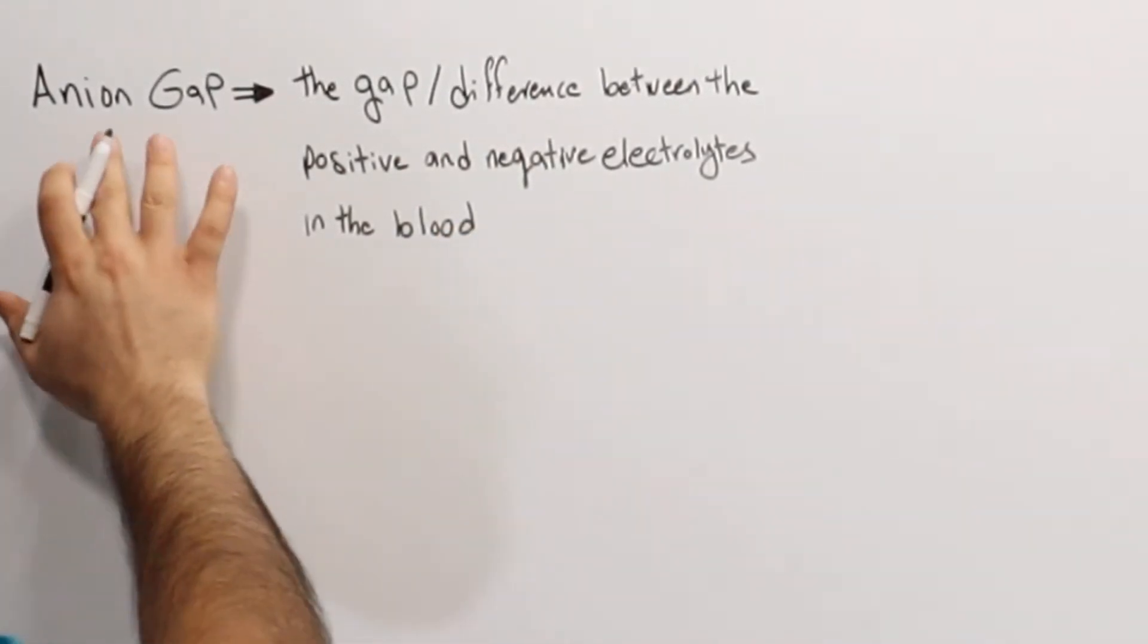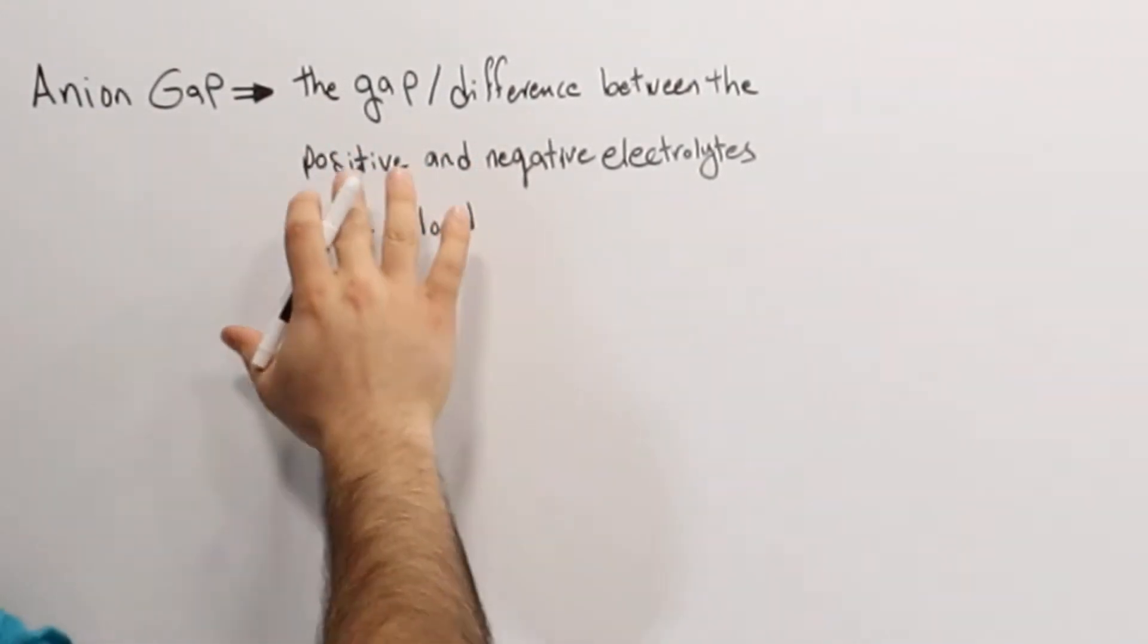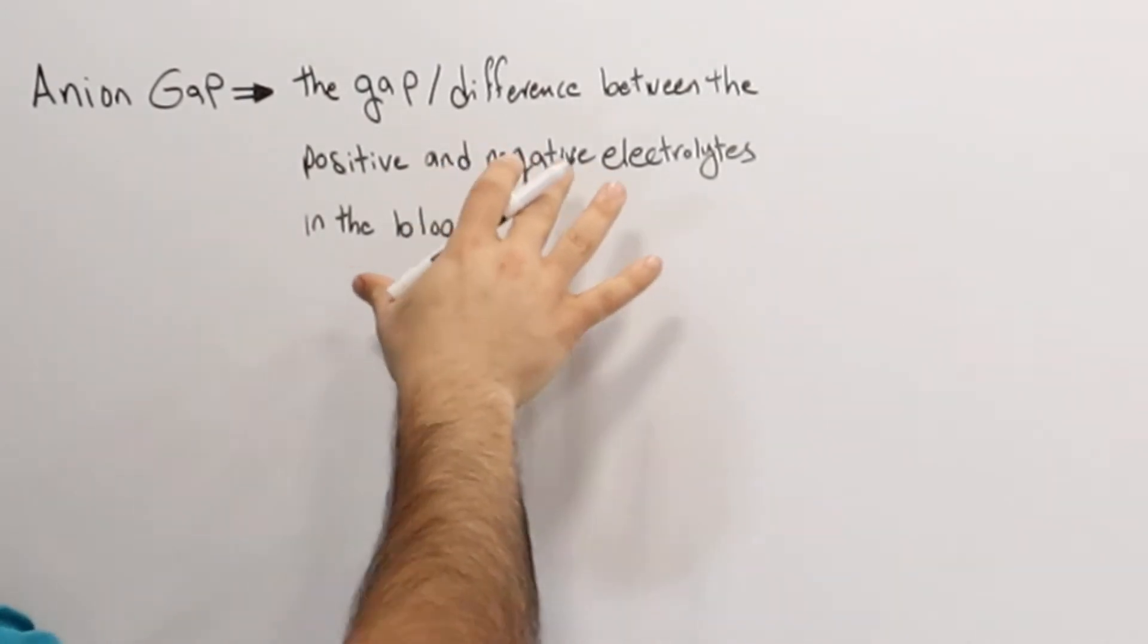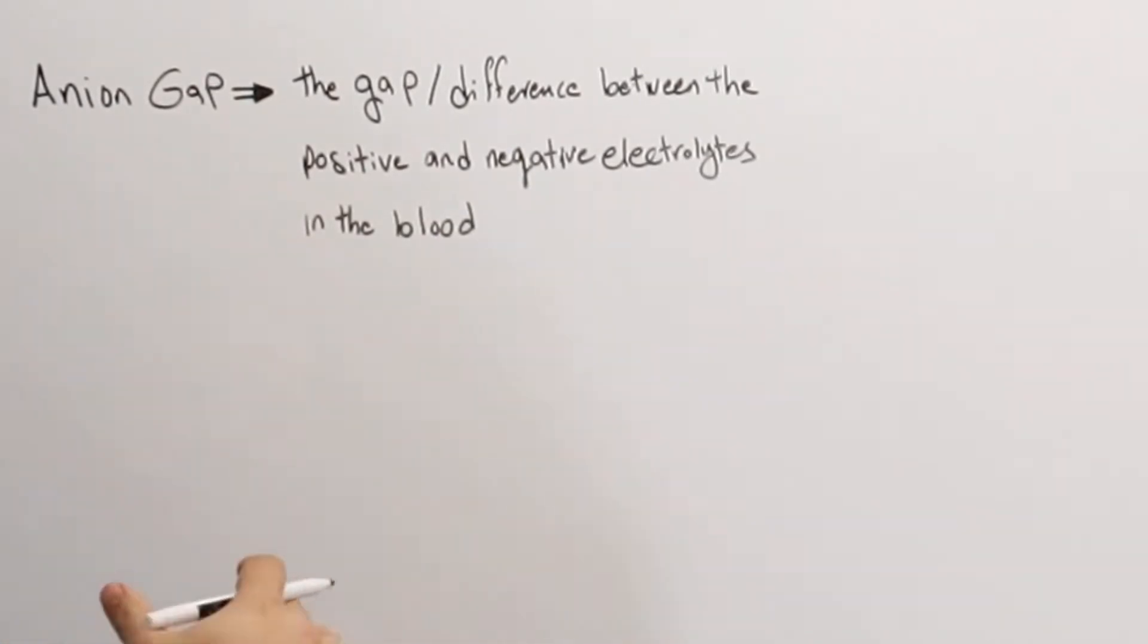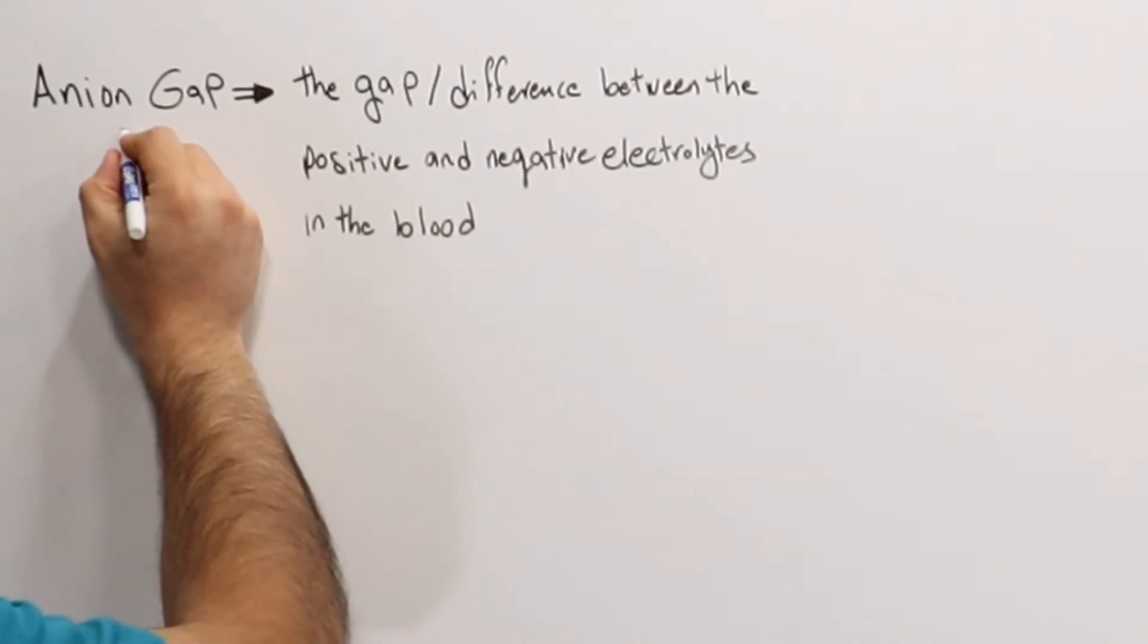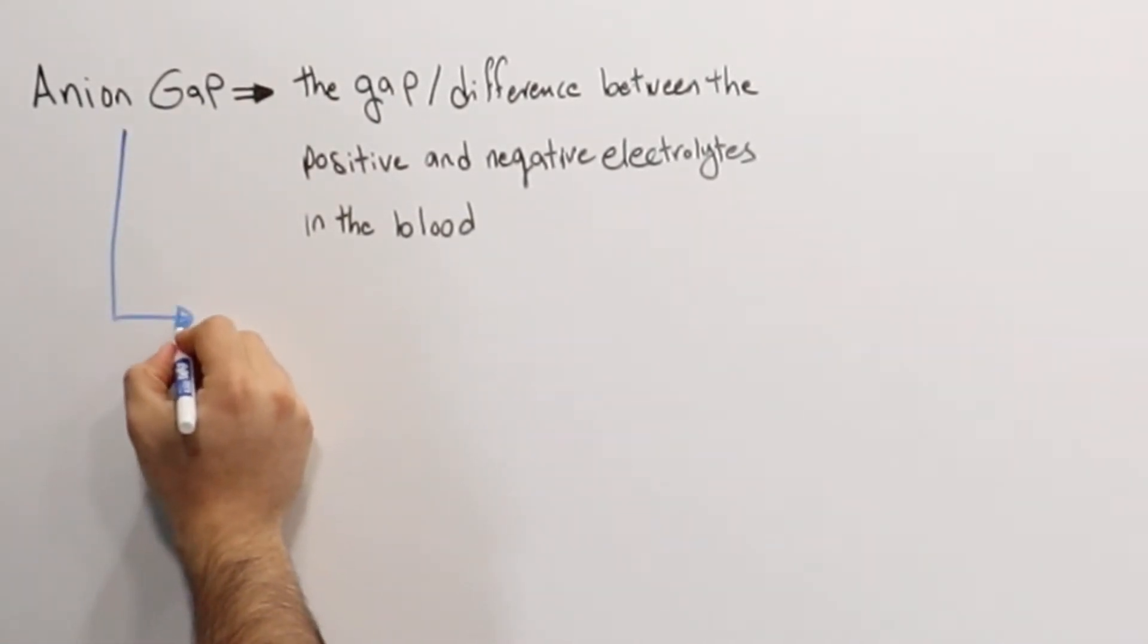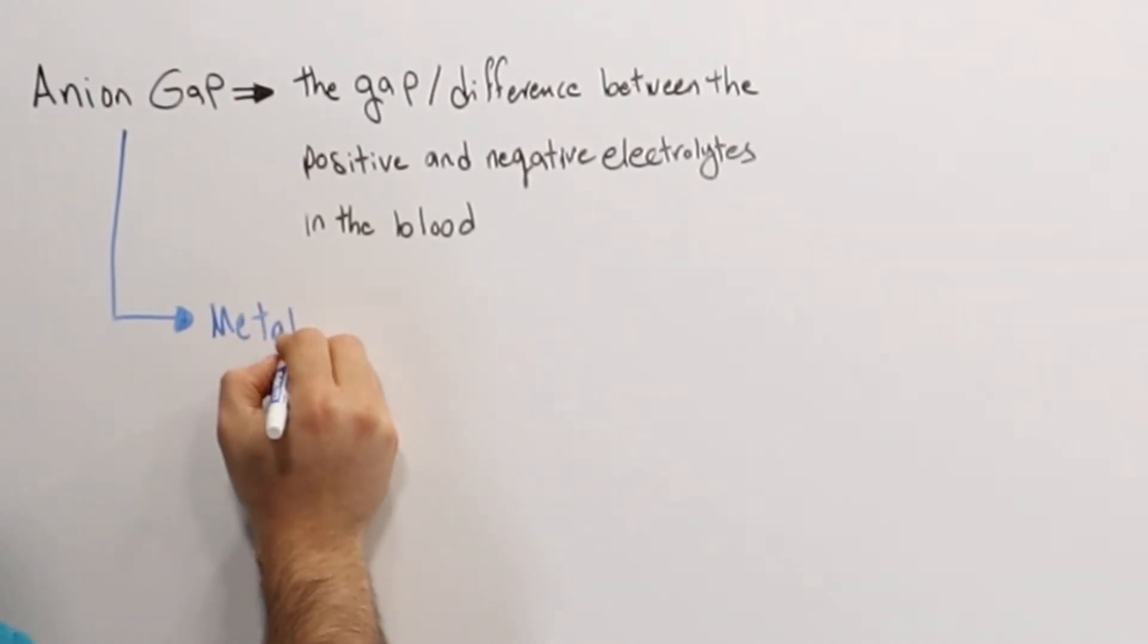So basically, anion gap looks at the positive and negative electrolytes that are in the blood. And usually, we calculate anion gap when we have metabolic acidosis.